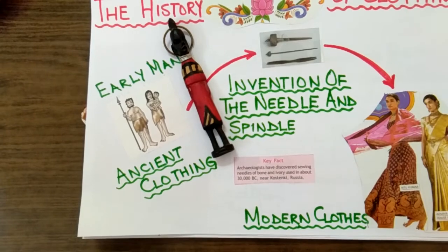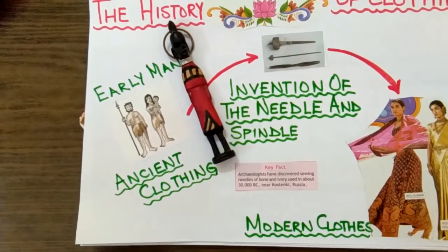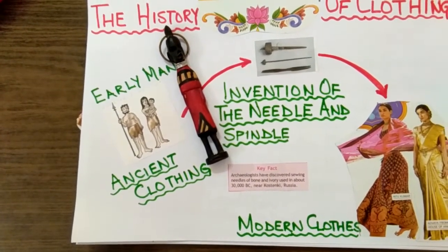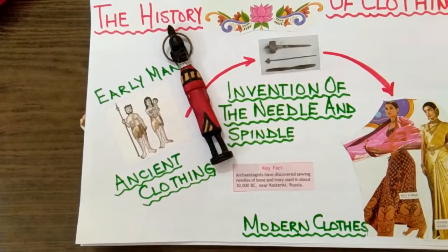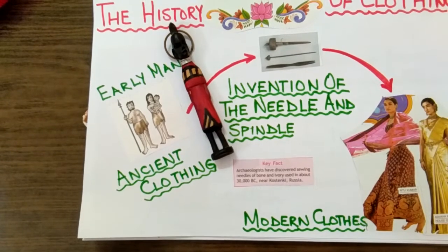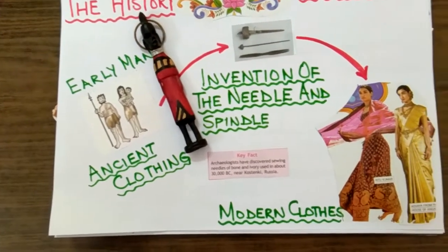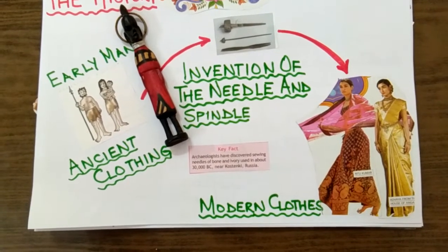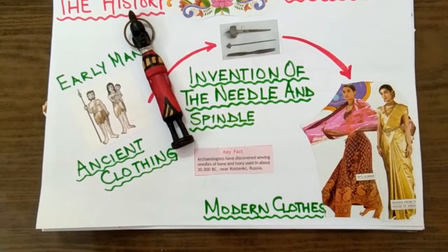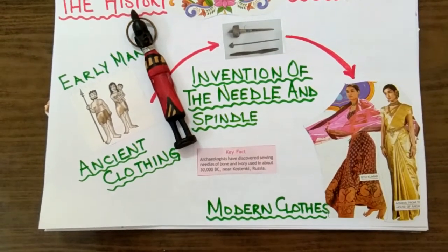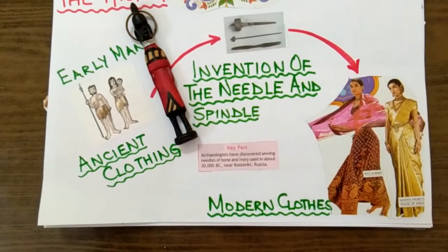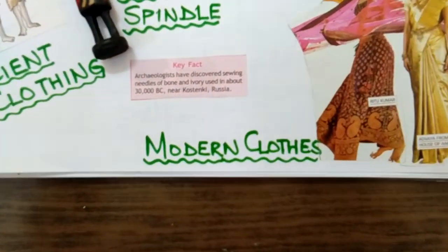People used to just wrap these around various parts of the body in different ways. After people began to settle down in different communities and with the development of agriculture, they learned to weave twigs and grasses into mats, baskets and other utility items. In India, cotton was grown near the river Ganga during the Harappan period as early as 2500 BC.